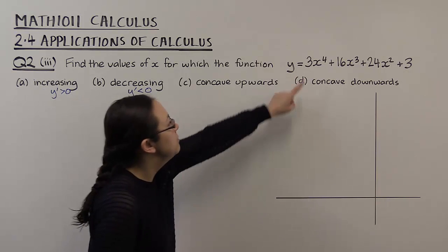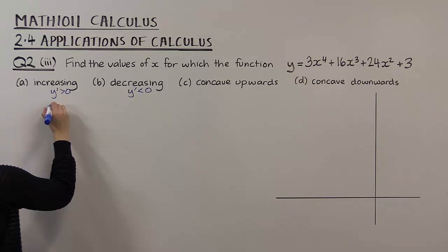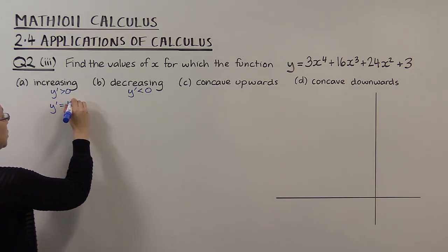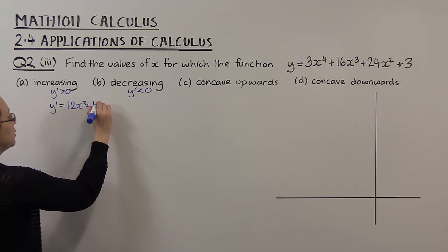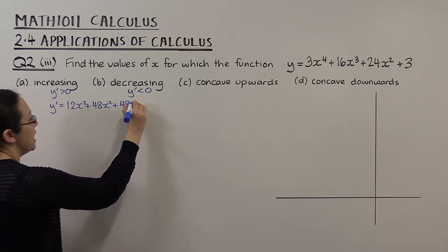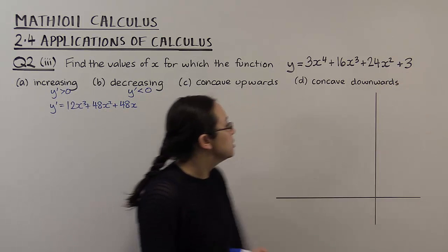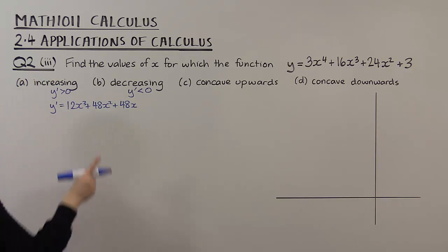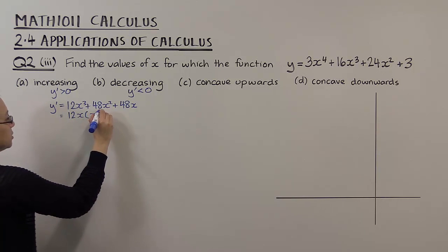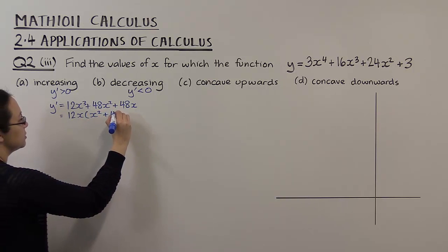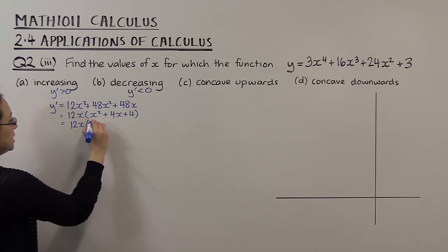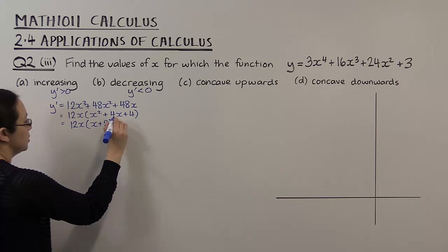If my function y is this quartic, first of all let's differentiate it. So y' will be 12x³ plus 48x² plus 48x — the constant 3 differentiates to zero. We can factorize this: 12x comes out, leaving x² plus 4x plus 4, and that further factorizes to 12x times (x plus 2) all squared.